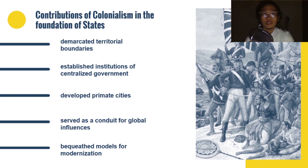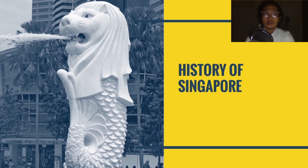To understand how colonization helped in molding Singapore, let us go back to its history. Singapore was once captured by the Portuguese, destroying its foundation from its past sultanates. But during the Napoleonic Wars, the British were able to challenge the Dutch for supremacy in the region, under the influence of Stamford Raffles.